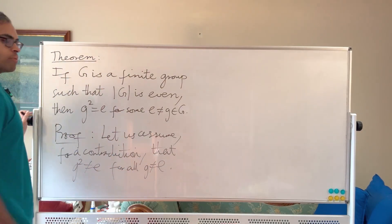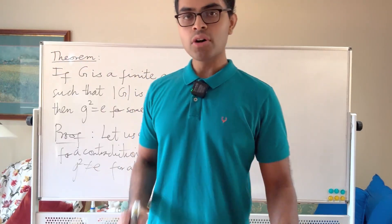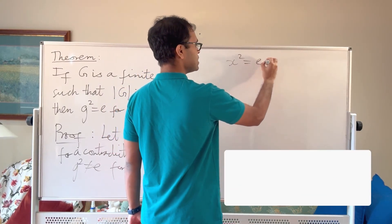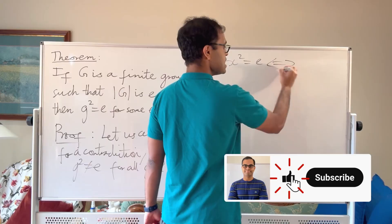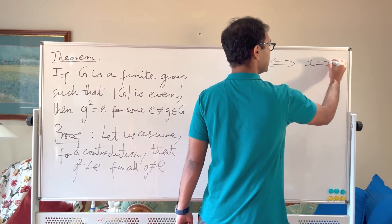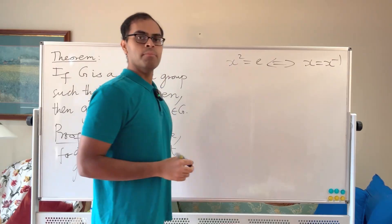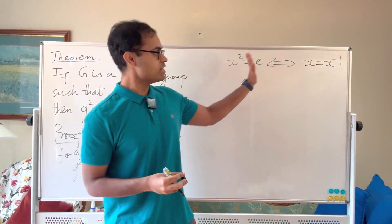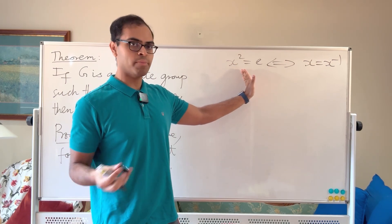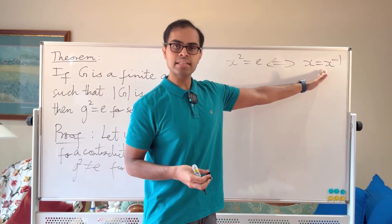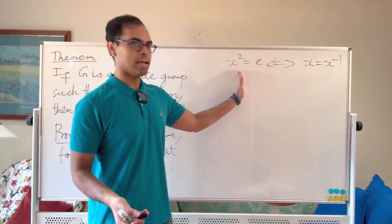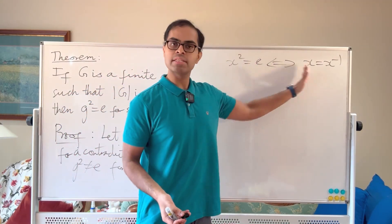So that's what we're going to assume — proof by contradiction. Notice that saying x squared equals the identity is equivalent to saying x equals x inverse. All you have to do to go from the left-hand side to the right-hand side is multiply both sides by x inverse. And vice versa: x equals x inverse, multiply both sides by x to get x squared equals e. So these two statements are the same.